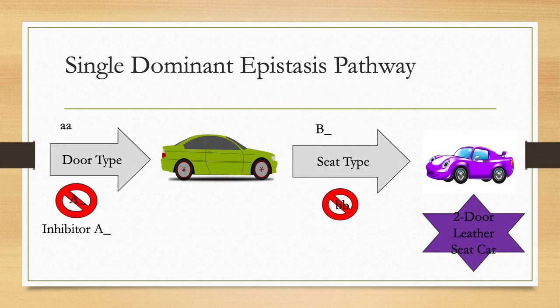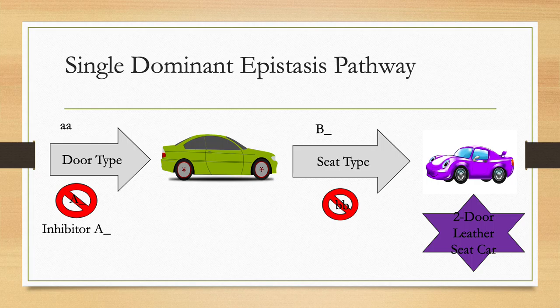Each parent donates one gene to the offspring, one for door type and one for seat type. In order to make a two-door car with leather seats, you need both parents to donate a little A, little A gene.